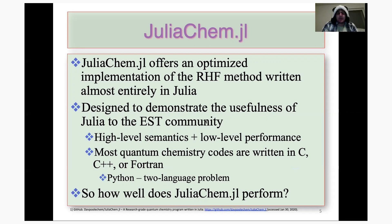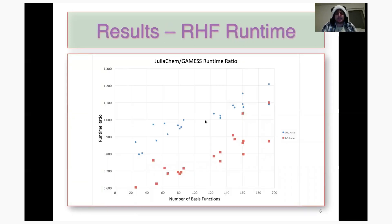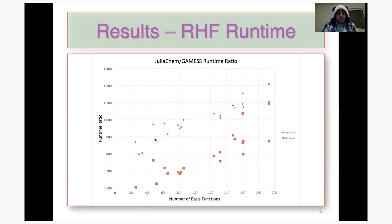So how well does JuliaChem actually perform? Taking a comparison of JuliaChem against GAMESS, one of the most popular quantum chemistry software packages, and doing a series of calculations on the S22 test set of molecules, and taking a ratio of their speed-ups, we get the plot shown here. Using the RESC algorithm, the speed-up for JuliaChem is quite significant in some cases, ranging up to 20 or even 40% speed-up, with most calculations showing speed-ups. Compared to the ERIC algorithm for electron repulsion integrals, JuliaChem keeps up with GAMESS for a good portion of calculations — especially for smaller ones where it tends to be faster. For the larger ones, it is slightly slower, on the order of about 10–15%, but overall JuliaChem tends to keep up with GAMESS pretty well.